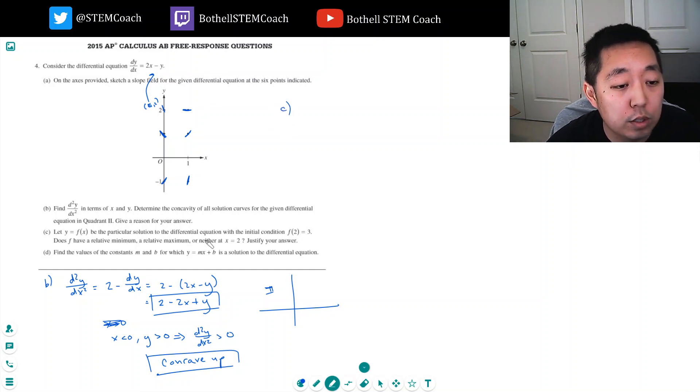Let f(x) be the particular solution to the differential equation with the initial condition. Does f have a relative min, relative max, or neither at x equals 2? Well, f'(2), which would be dy/dx at 2, would be 2 times 2 minus 3. Because this is the y value. This is y and x. They're saying at the point x, sorry, I had it backwards. The x is 2 and this is y. So, this is the point 2, 3.